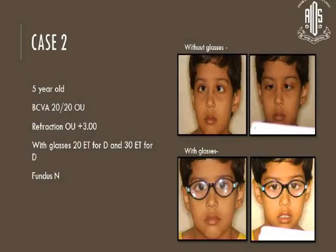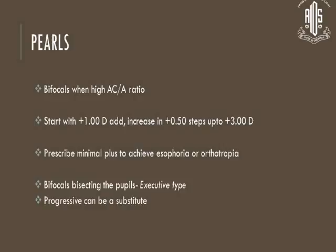Case 2: a 5-year-old child with visual acuity of 6/6 in both eyes and refraction of plus 3. But with the glasses there was still about 20 prisms of ESO. There was 30 prisms ESO without the glasses, and with glasses there was a residual ESO with all other parameters being normal. So what we will have to give is bifocals.